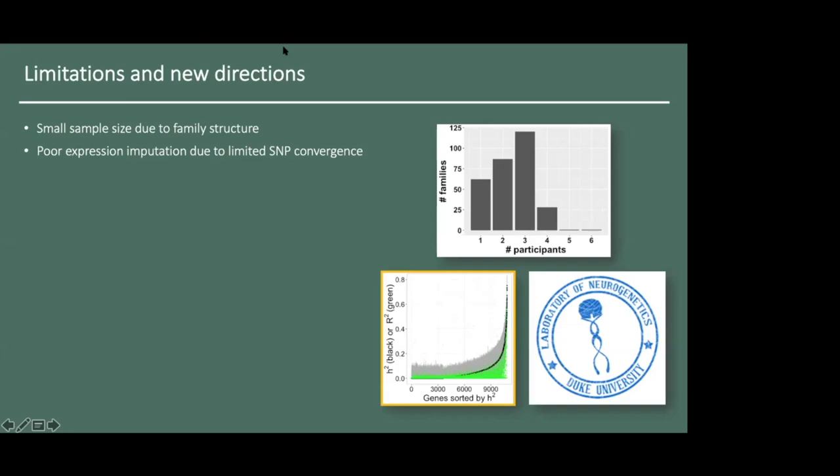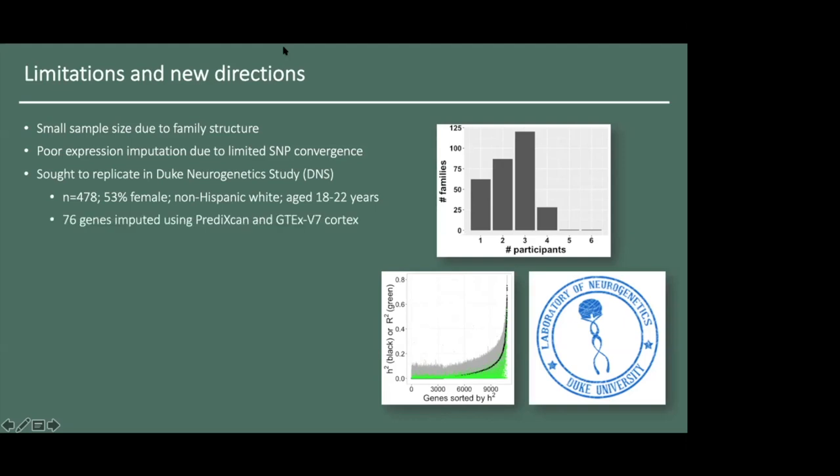In order to address these limitations, we sought to replicate our findings in the Duke Neurogenetics Study. As you can see, this included a larger sample with 478 subjects, all of whom were non-Hispanic white and university-aged. In this case, we were able to impute cortical expression of 76 depression-associated genes using PrediXcan and the same reference transcriptome, and we used largely the same approach as in the previous analysis. However, there were several notable exceptions.